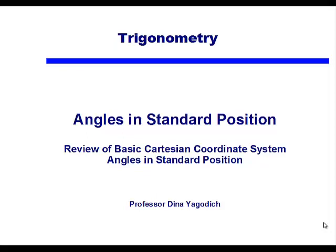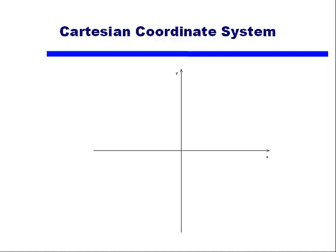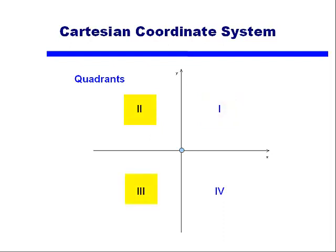Now we're going to talk about angles in standard position. We'll start off with a review of the basic Cartesian coordinate system, and then talk about what it means to have an angle in standard position. We have our x-axis and our y-axis, and where they meet is a 90 degree angle. The spot where they intersect is called the origin. We can divide the Cartesian plane into four quadrants, starting with quadrant I in the upper right-hand corner, and going counterclockwise to quadrants II, III, and IV. We use Roman numerals when talking about quadrants.